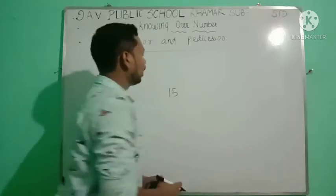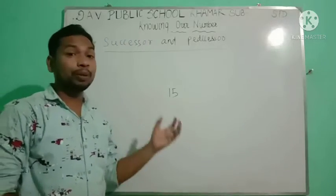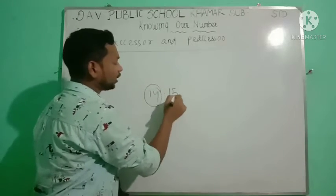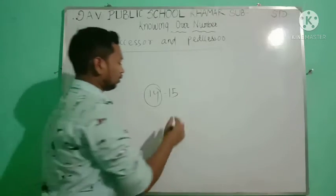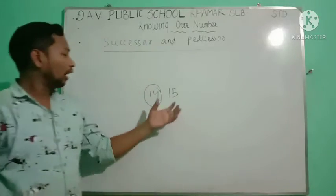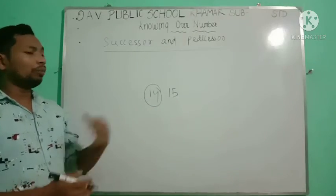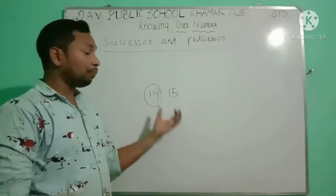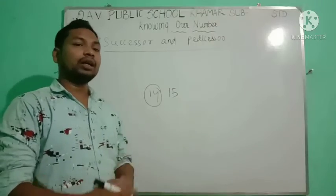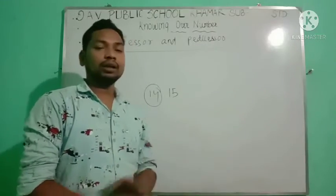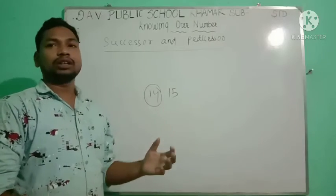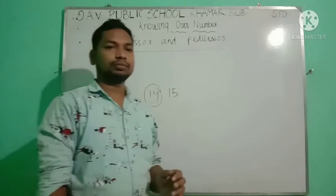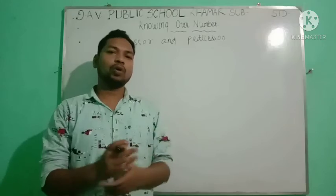The predecessor of a number is the number which comes just before it. For example, the predecessor of 15 is 14. If we subtract one from 15, we also get 14. The number which just comes before any number is called the predecessor of that number. We can find it by subtracting one.